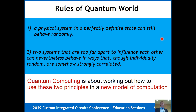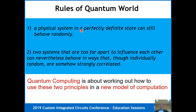First: a system that's in a perfectly definite state can behave in a way that looks random. That's due to superposition — a quantum state can be in any linear combination of two states simultaneously. It is both at the same time. The second property is almost weirder: two systems too far apart to influence each other by the speed of light can nevertheless behave in ways that, though individually look random, are completely correlated. That's the weird property of entanglement.